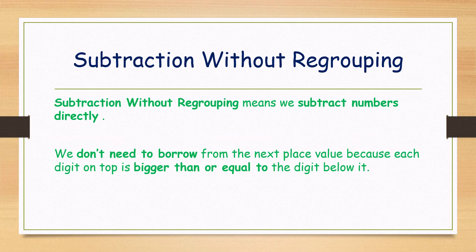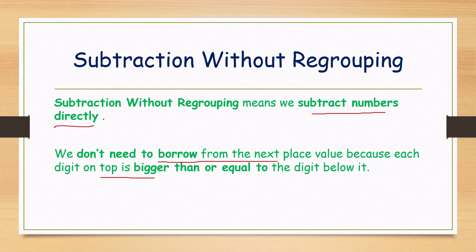Next, subtraction without regrouping. What does without regrouping mean? We subtract numbers directly. No need to borrow from the next place value because each digit on top is bigger than or equal to the digit below.